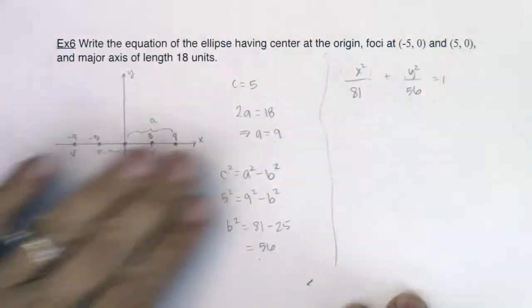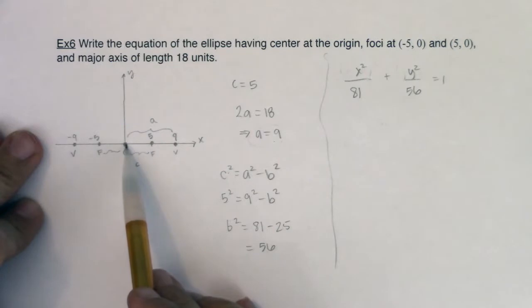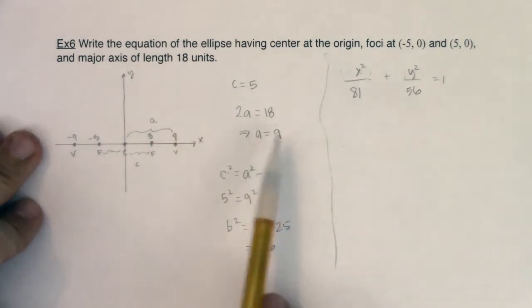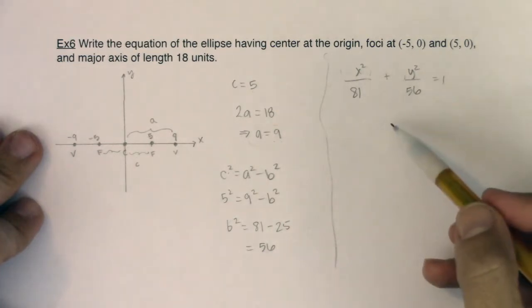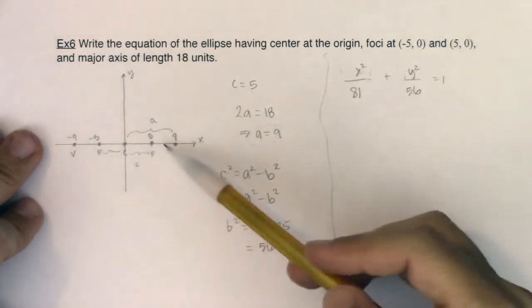So again, I just want to reiterate here. I went through, I had my center, which happened to be at the origin. The distance from your center to your foci or a focus is always c units. So that's where I knew c was 5. They told me the length of the major axis was 18 units and the major axis is always 2a. So that means a is 9. Once I know a and c, I can plug into this equation and solve for b. I only solved for b² because that's ultimately all I needed in this denominator here.